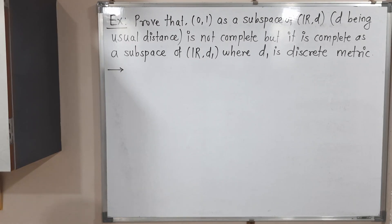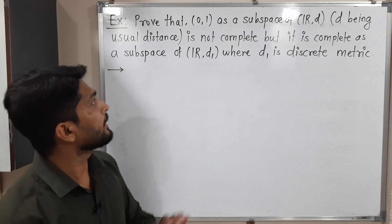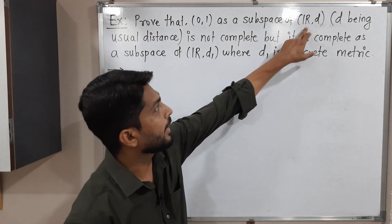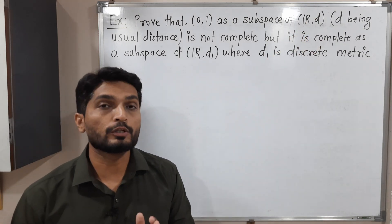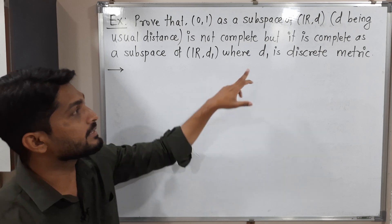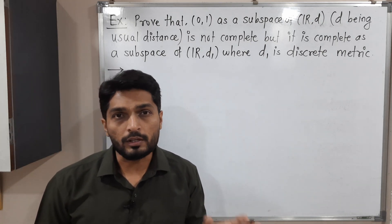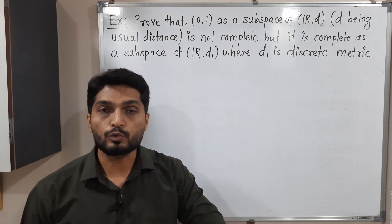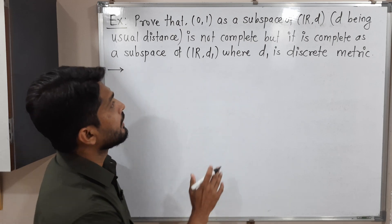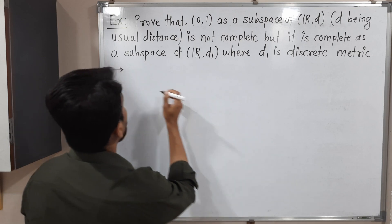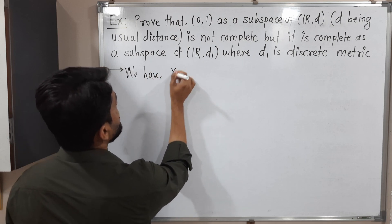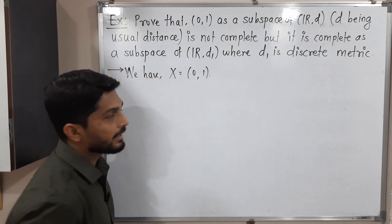Hi everyone. In this video we are going to discuss this example. We have the open interval (0,1) which is a subset of R, and we have to prove that it is not complete with the usual distance. There is a second part also: we have to prove that it is complete in (R, d₁) where d is a discrete metric.